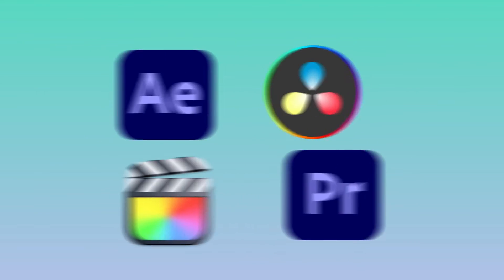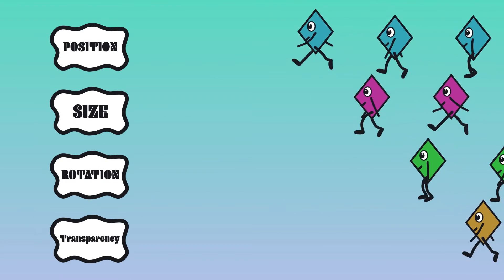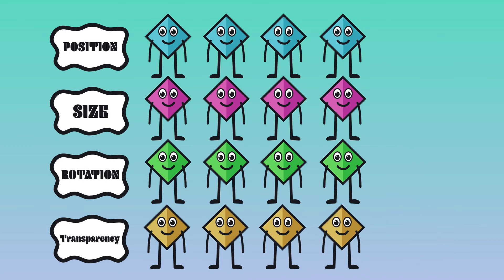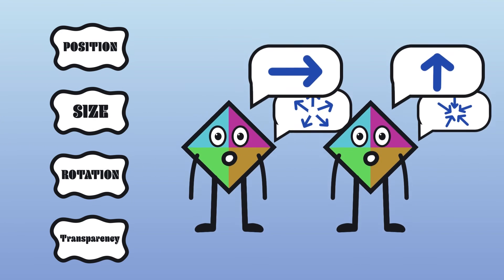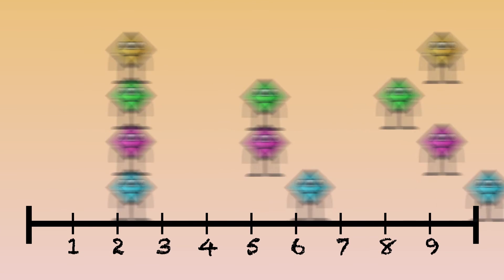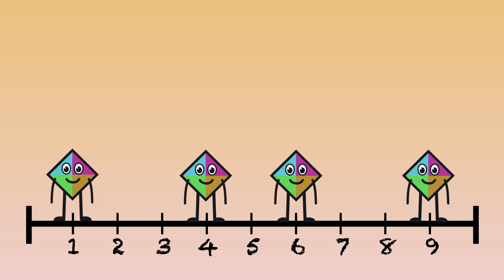You may notice in advanced software, every property has its own keyframe. Whereas in some of the simpler editing softwares, they'll just use one keyframe to keep track of all the information. Multiple keyframes gives you more control, while a single keyframe keeping track of everything is just a little bit simpler.